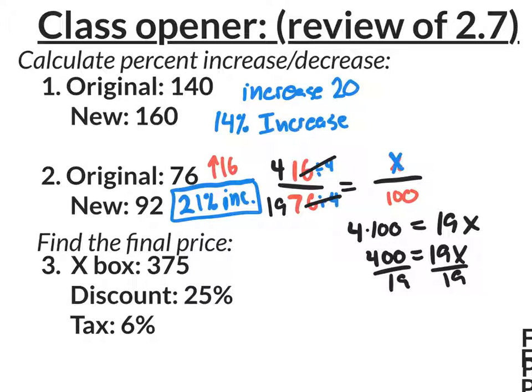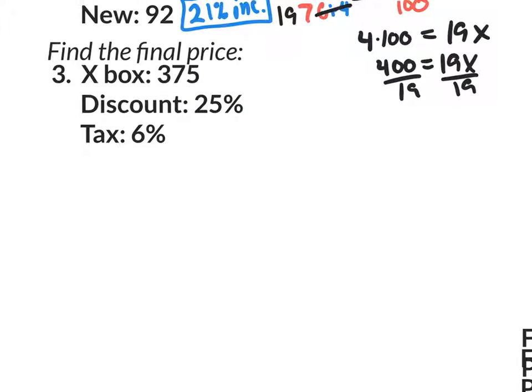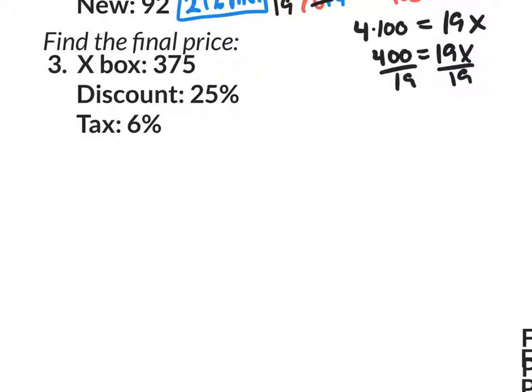Okay. Let's move on to number three. So there's going to be, I think, two of these on the Quiz Friday. And there's going to be two of these on the Quiz Friday. That's going to consist of the 2.7 on the Quiz Friday. So let's look at this final price situation. So we want to buy an Xbox. The price is $375. There's a 25 percent off sale on the whole store. And the tax rate is 6 percent.